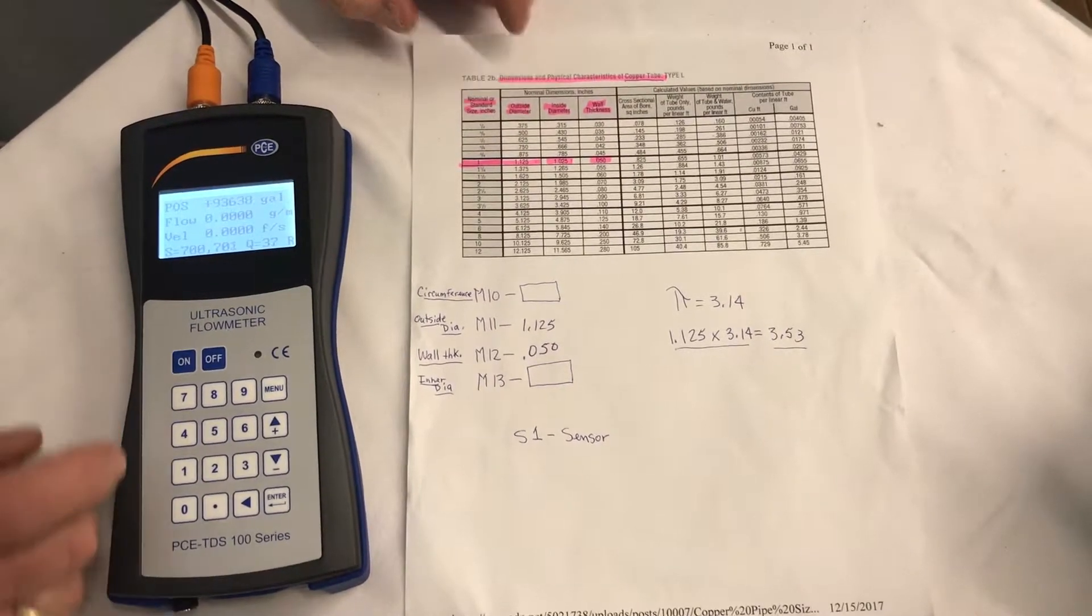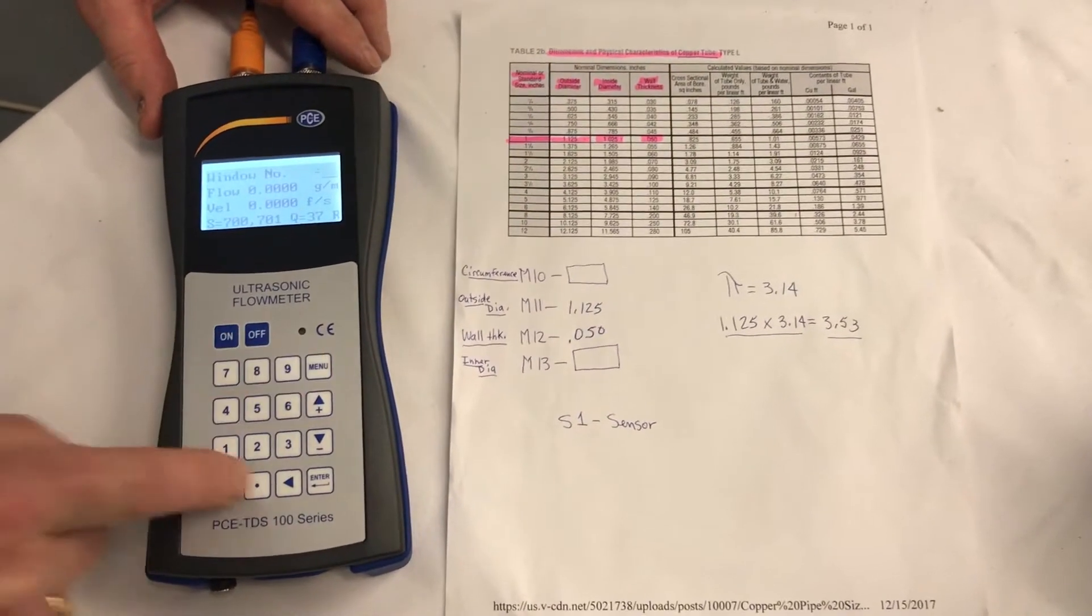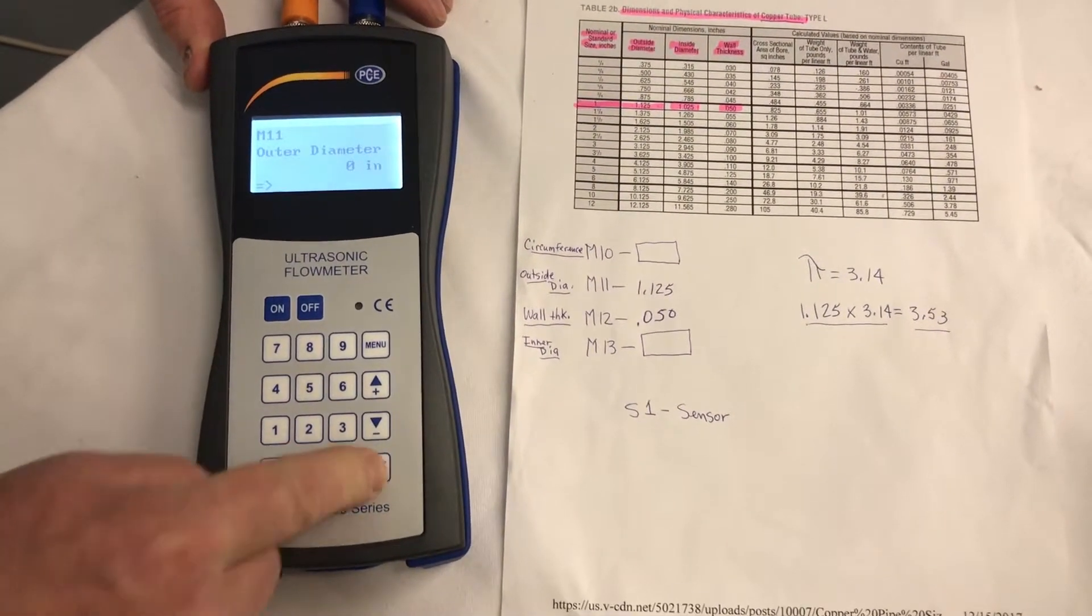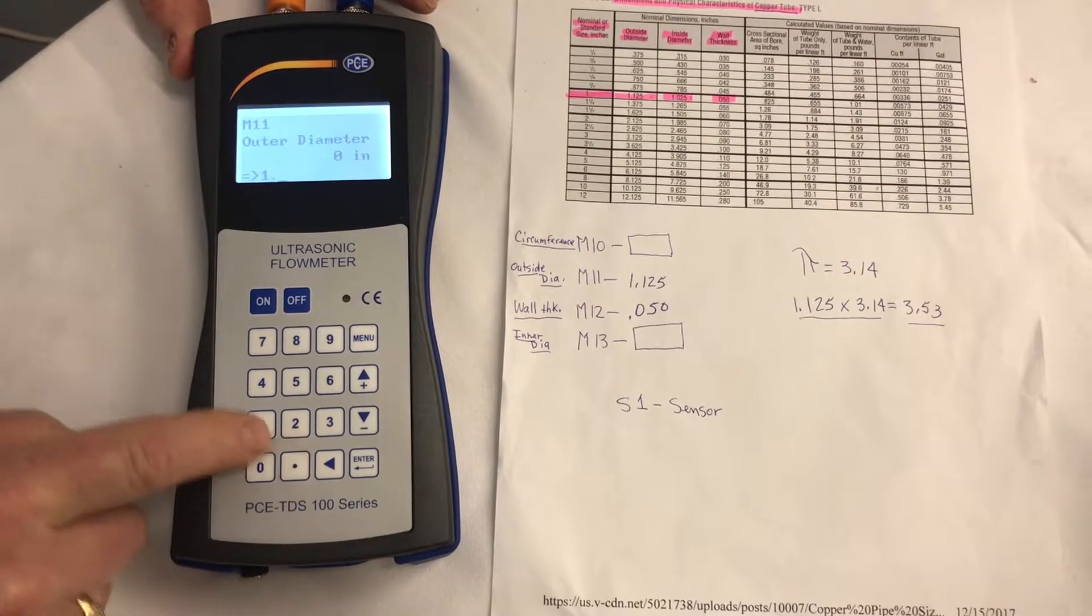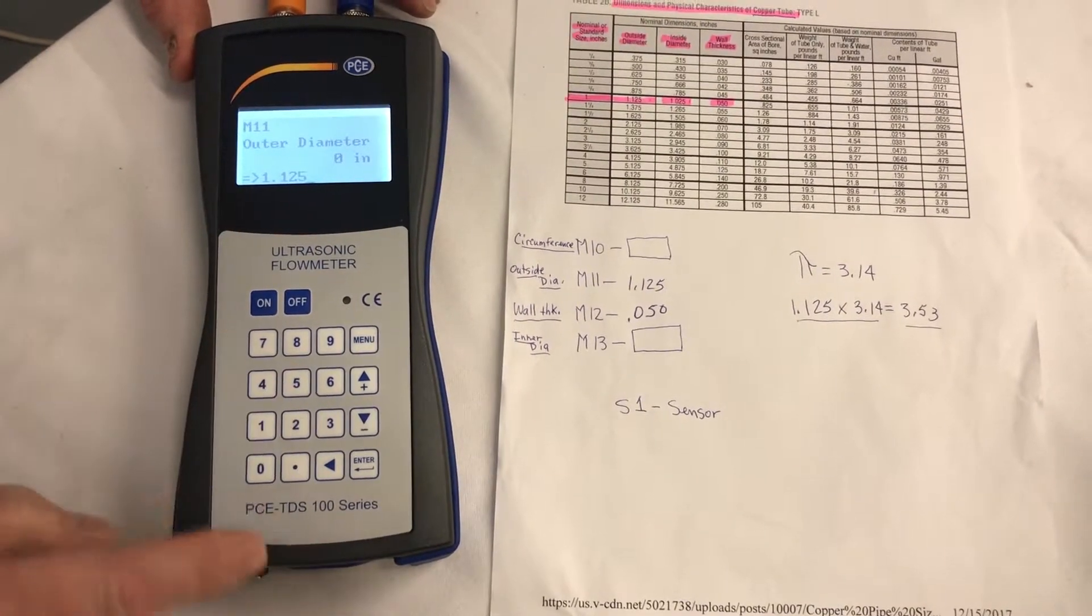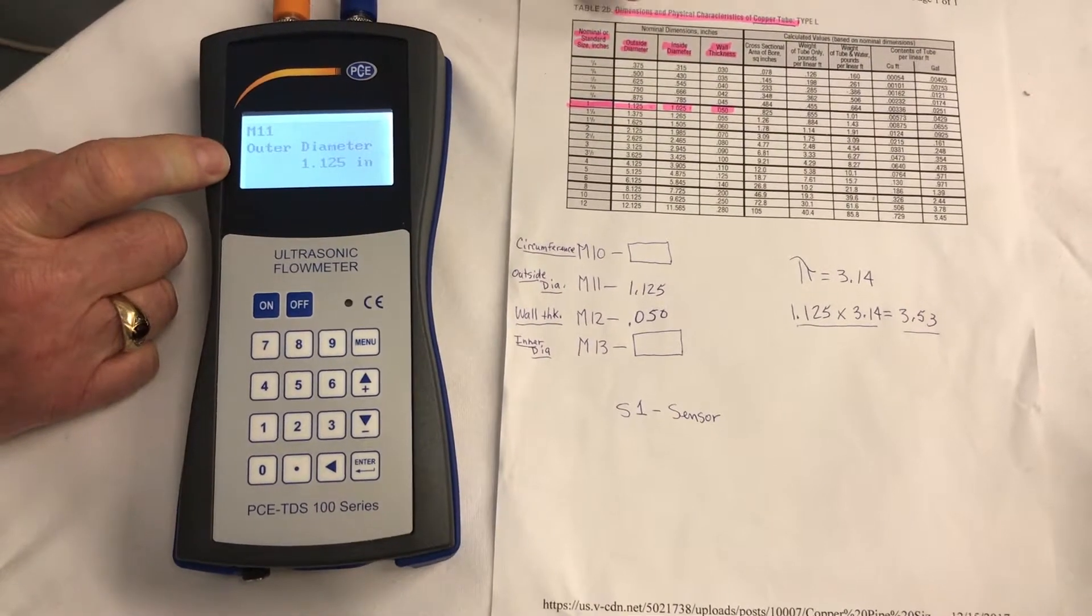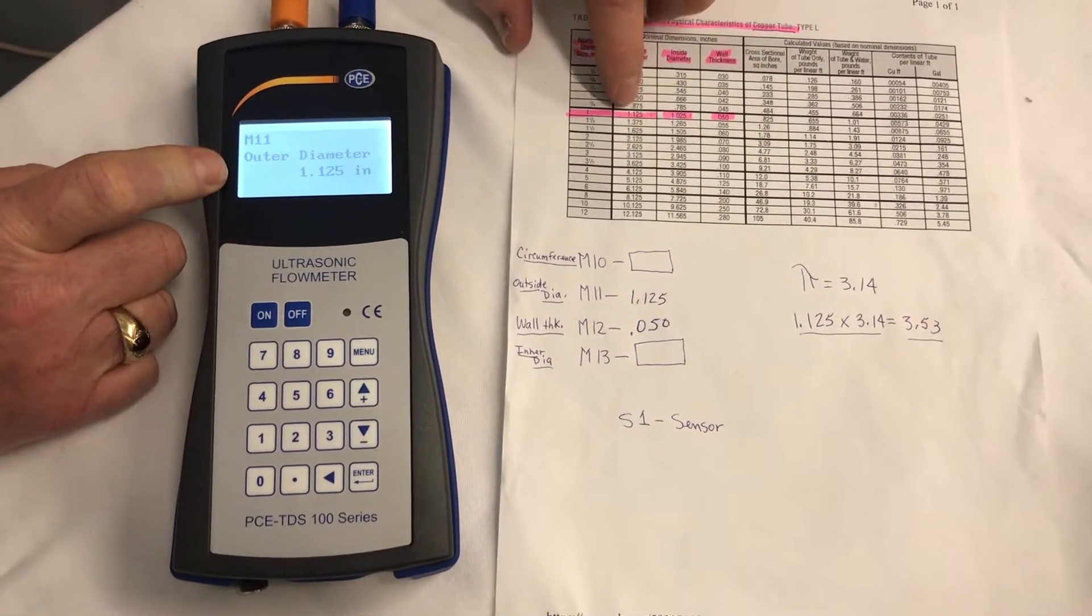On the meter, we go to menu 11, and there's our outer diameter, and we enter 1.125, enter. Now we have the outside diameter at 1.125, same as our chart for copper tube.